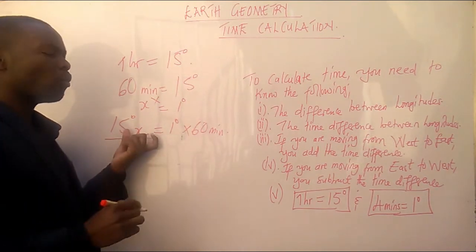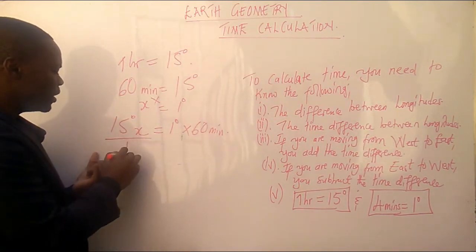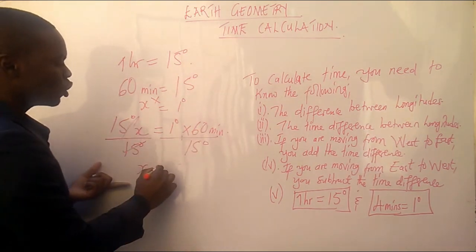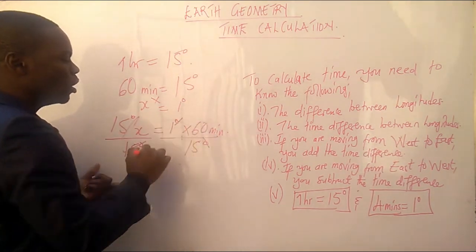Now, we are interested in knowing the value of x. Therefore, we divide 15 degrees on both sides of our equation. So, x is equal to, so degree, degree will go.